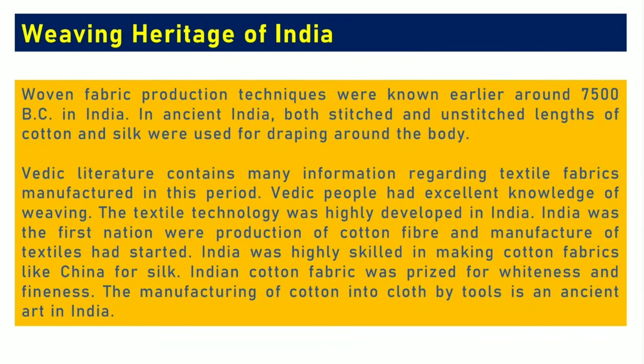Let's understand first about the weaving heritage of India. Woollen fabric production techniques were known earlier around 7500 BC in India. In ancient India, both stitched and unstitched lengths of cotton and silk were used for draping around the body. Vedic literature contains much information regarding textile fabrics manufactured in this period. Vedic people had excellent knowledge of weaving, and the textile technology was highly developed in India. India was the first nation where production of cotton fiber and manufacture of textiles had started.